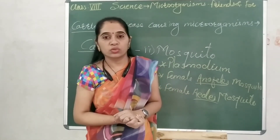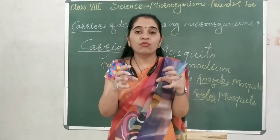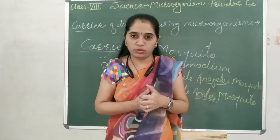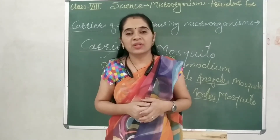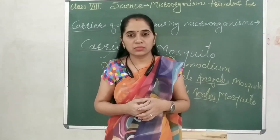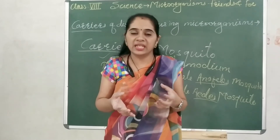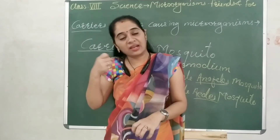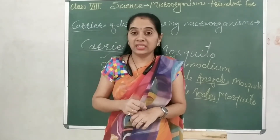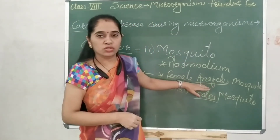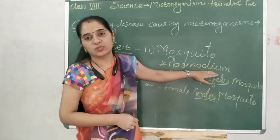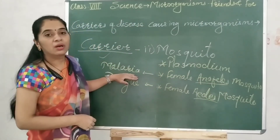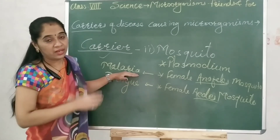Mosquitoes need warmth to hatch their eggs — mostly female mosquitoes. Human blood or animal blood provides that warmth, as we are warm-blooded animals. So they suck the blood. And while sucking the blood, these female Anopheles mosquitoes spread this plasmodium into the healthy person and we become susceptible to malaria.